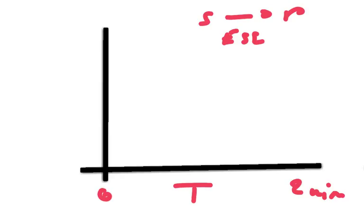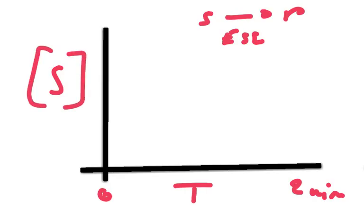There are two types of reactions: putting things together, which is anabolic, and breaking apart, which is catabolic. If we plot substrate concentration over time, when we start the reaction the substrate concentration is at a high level. As soon as the reaction begins, the substrate concentration falls because the substrate is being turned into product.